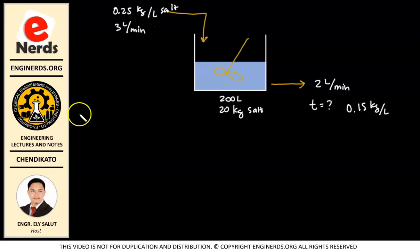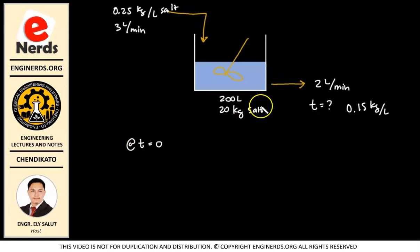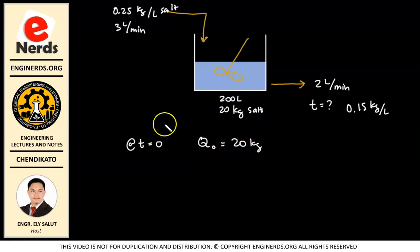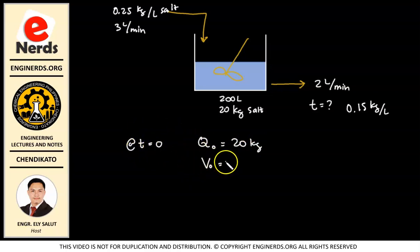Remember that at time equal to 0, our initial condition is that the amount of salt in our tank is 20 kilograms. So Q(0) = 20 kg. And initially, at time equal to 0, our volume V(0) = 200 liters.